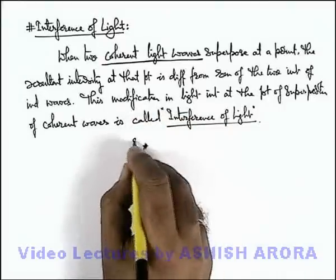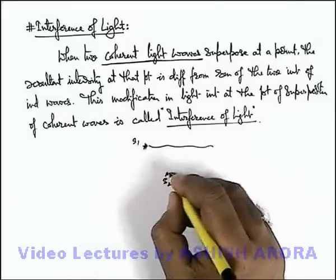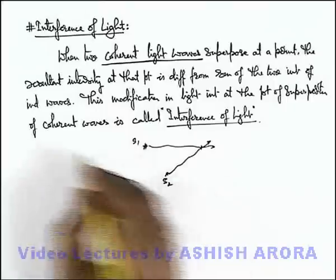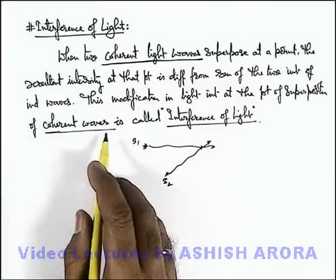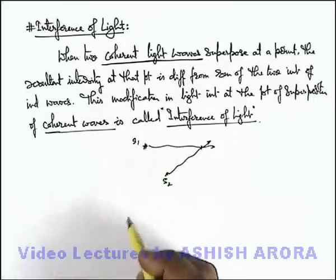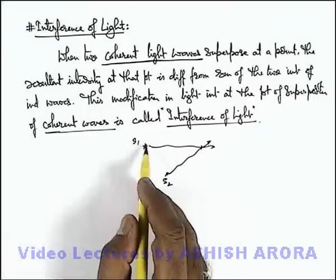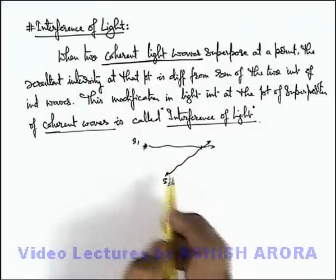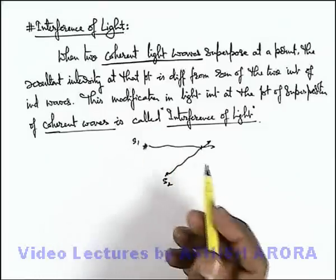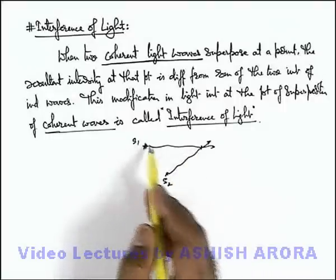Say if this is source 1 and this is source 2, which are producing light waves, and these are coherent. We already studied about coherent waves — these are the waves which have exactly the same phase, constant frequency, and zero time lag between the sources, or constant initial phase difference between the 2 waves. Such sources are called coherent sources, and the waves emitted by these sources are called coherent waves.